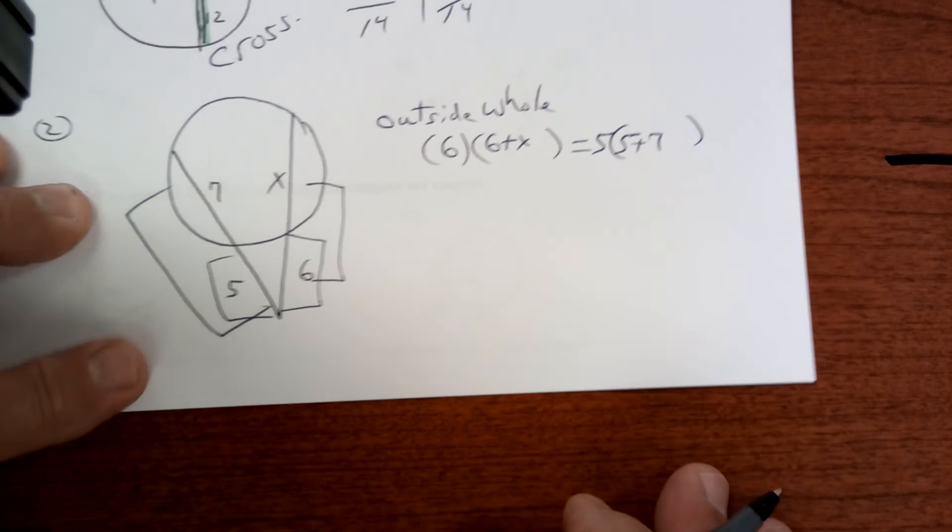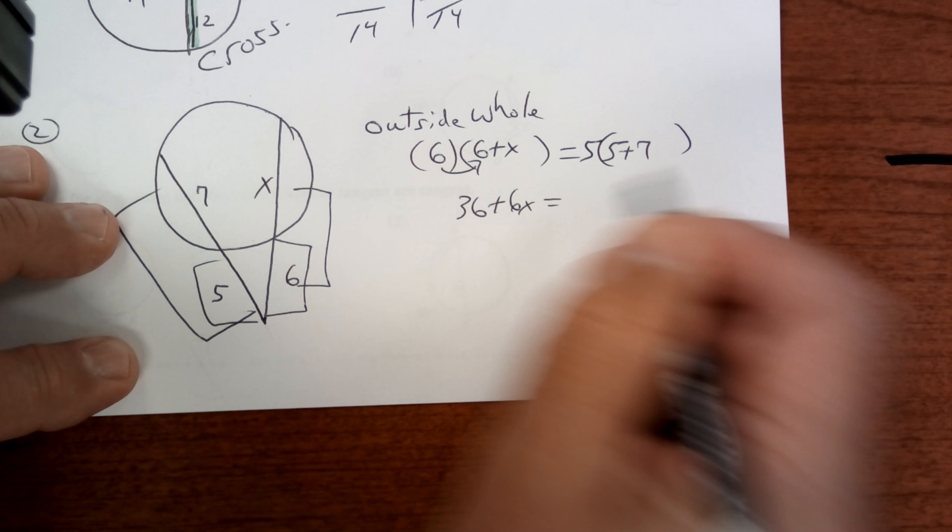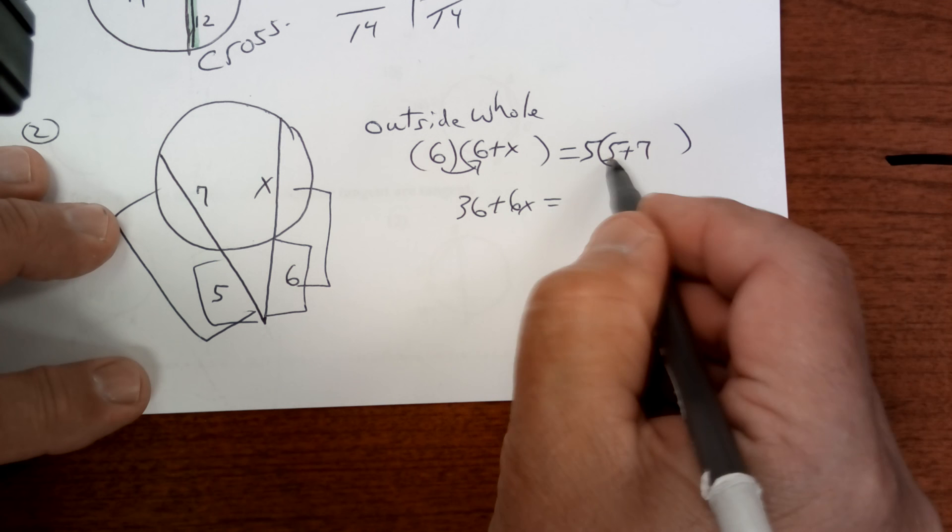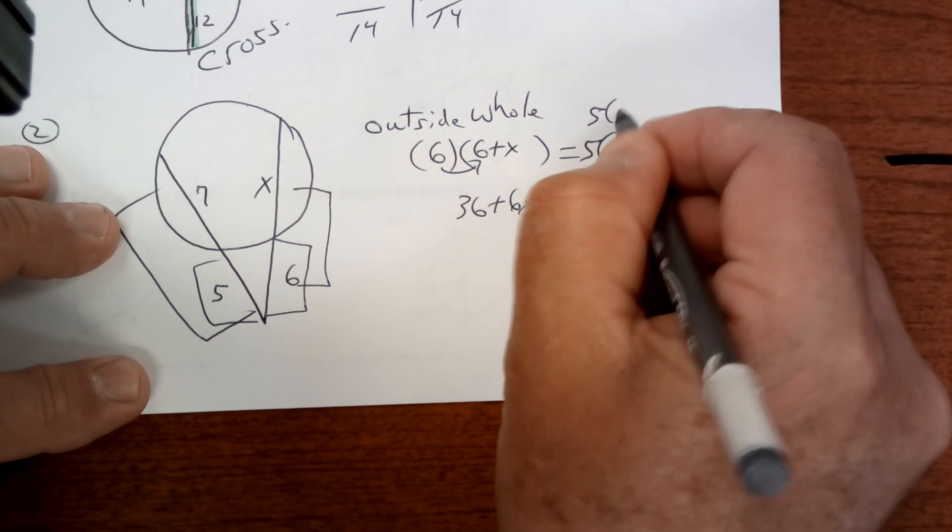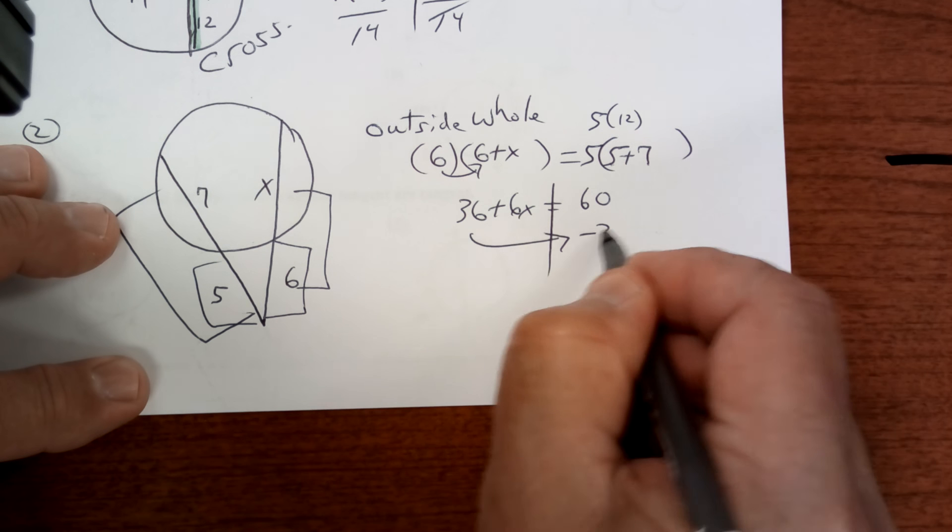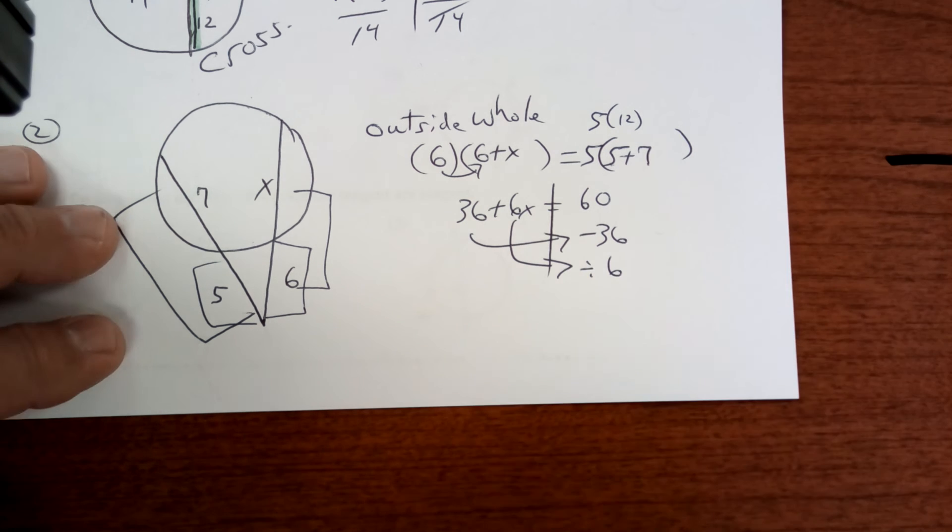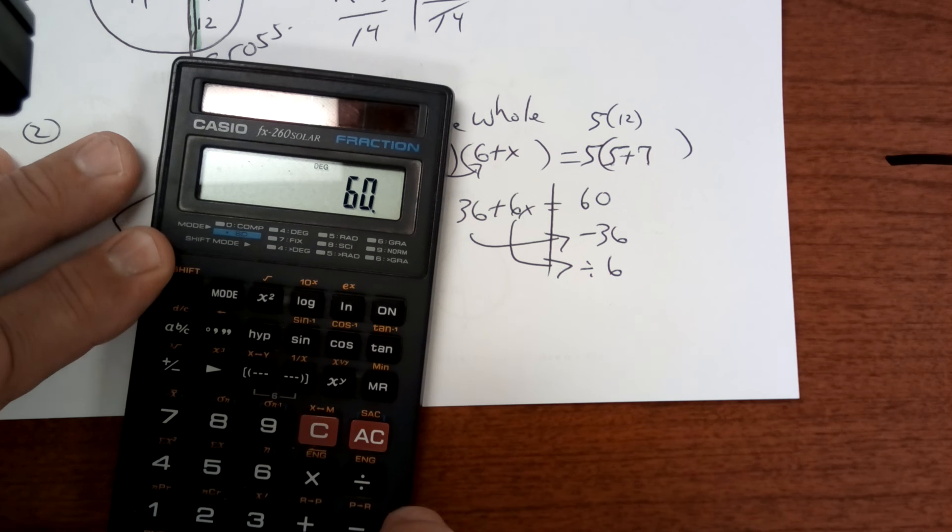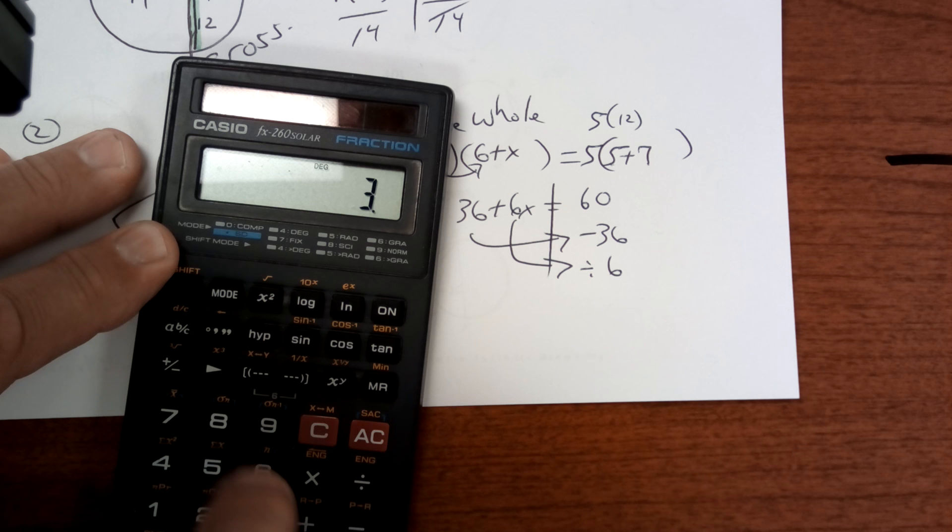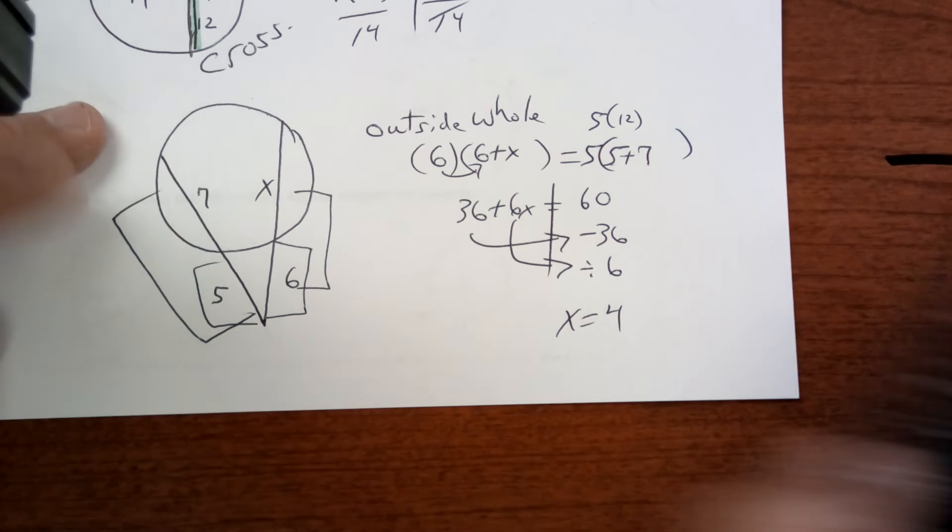So this one's going to be 6x. 6 times 6 is 36 plus 6x. This one's going to be 12. So 5 times 12 is 60. And now you're going to subtract 36 and then divide by 6. And you're done. So remember, outside times the whole thing. So 60 minus 36 divided by 6. And I get 4. x equals 4. And there it is. And that's how you do it.